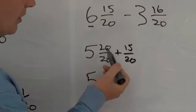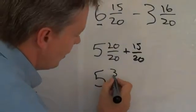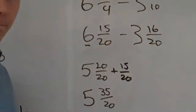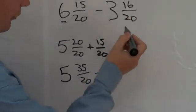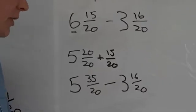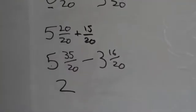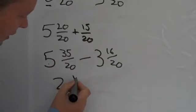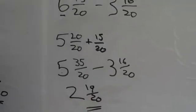Okay. So if we have that little lot together, we've got five whole ones. Twenty twentieths plus fifteen twentieths is thirty-five twentieths. Yeah? Now what we can do is we can take away the three and sixteen twentieths of our original question. So five take away three is two, thirty-five take away sixteen is nineteen twentieths. And there's your answer.